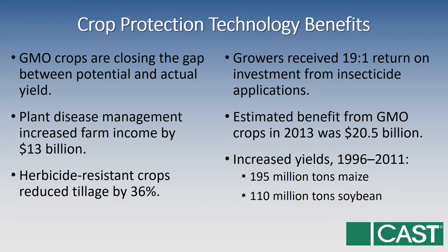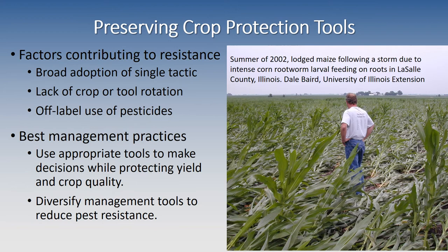There are many benefits to crop protection technology. GMO crops are closing the gap between potential and actual yield estimates. Plant disease management has increased farm income by 13 billion dollars. We've seen a reduction in tillage by 36 percent as a result of herbicide resistant crops. Growers have received a 19-to-1 return on investment from insecticide applications, and we've estimated the benefit from GMO crops in 2013 at over 20 billion dollars, with an additional 195 million tons of maize and 110 million tons of soybean between 1996 and 2011.